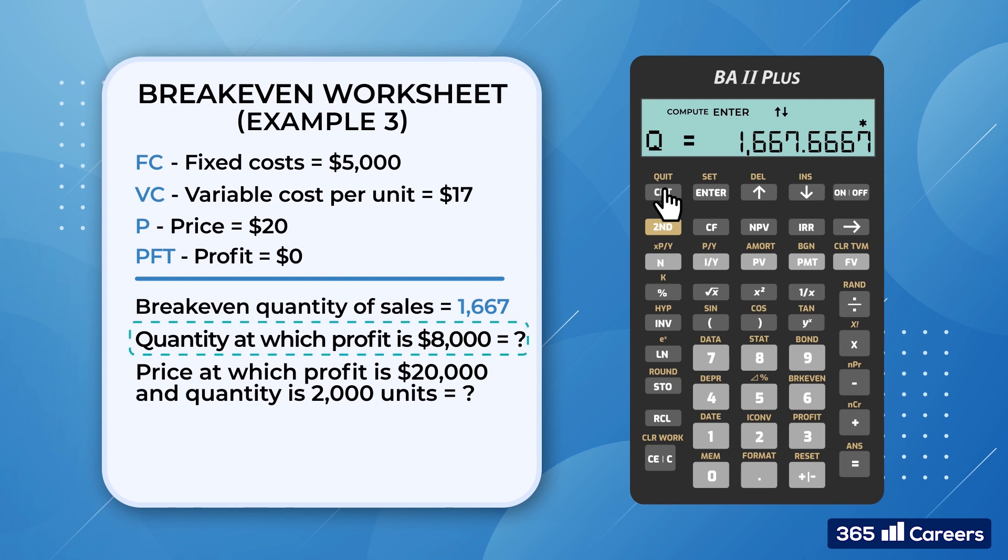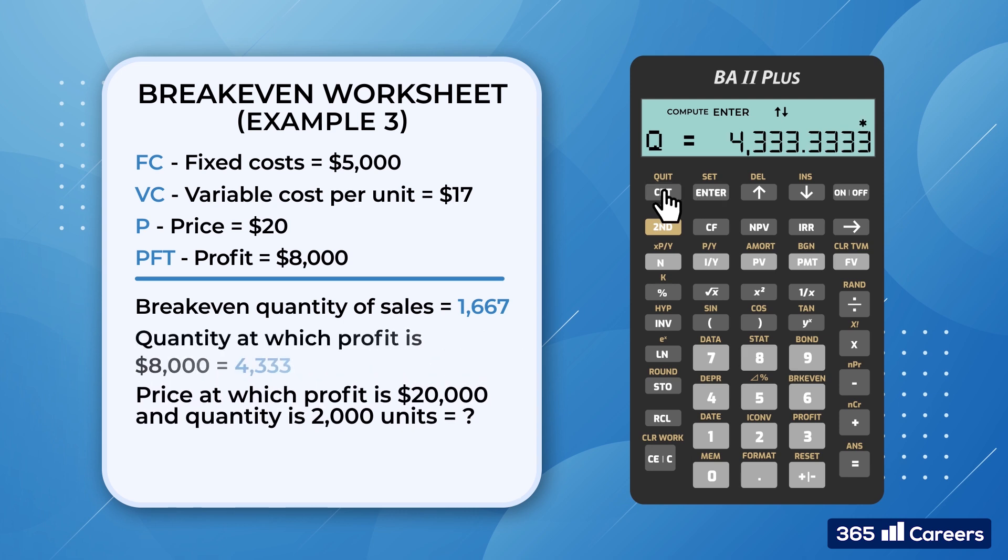Great! Now, let's solve the second piece of the puzzle. We would like to calculate the quantity at which the profit would be $8,000. That should be easy. We scroll back to the profit, PFT, and type $8,000. Then we find Q and press Compute to find that it equals 4,333 units.